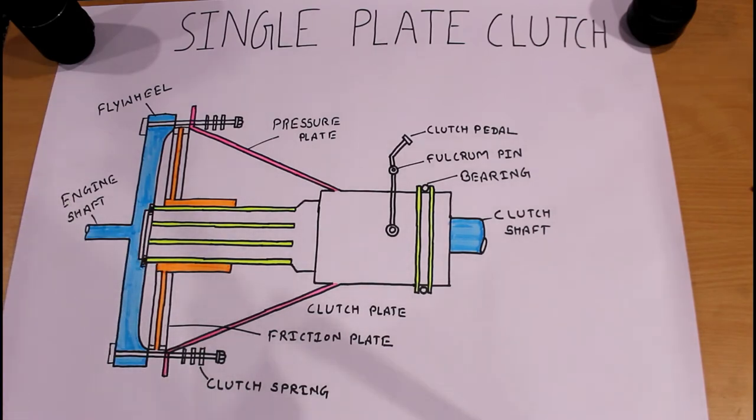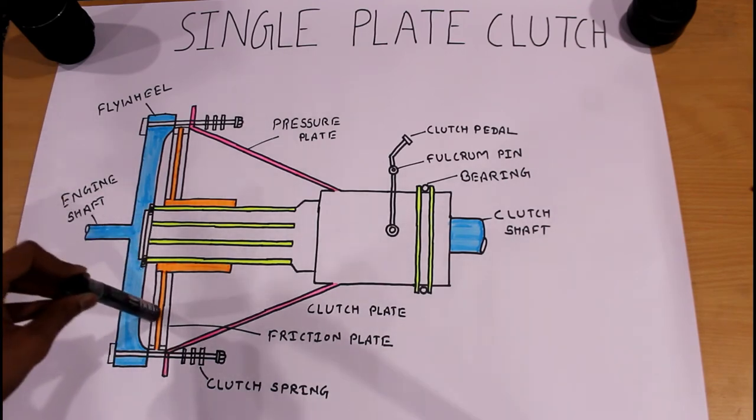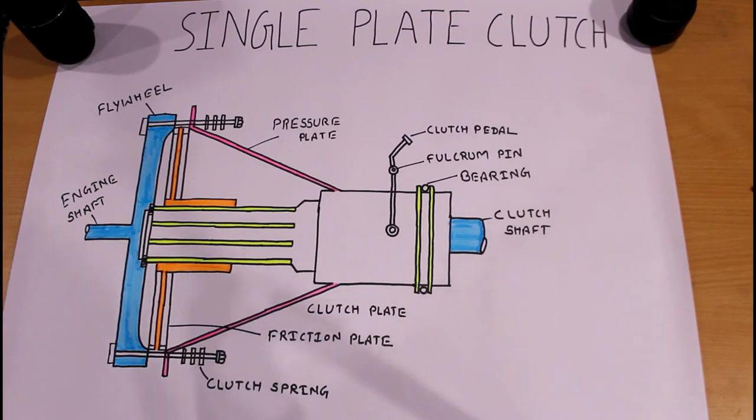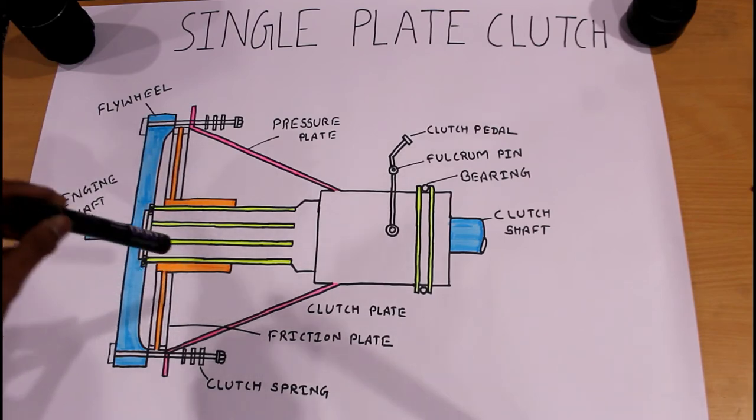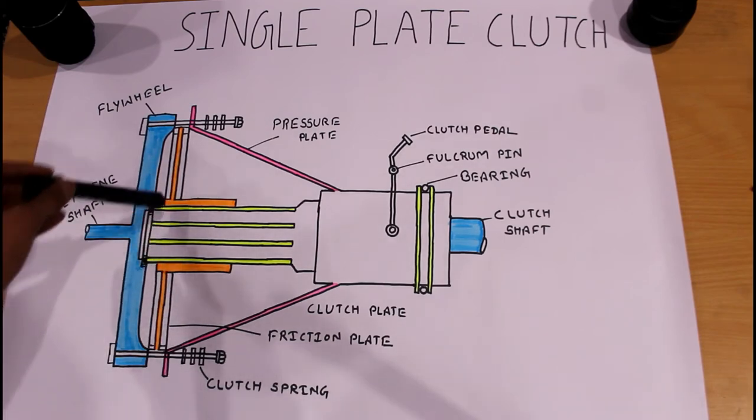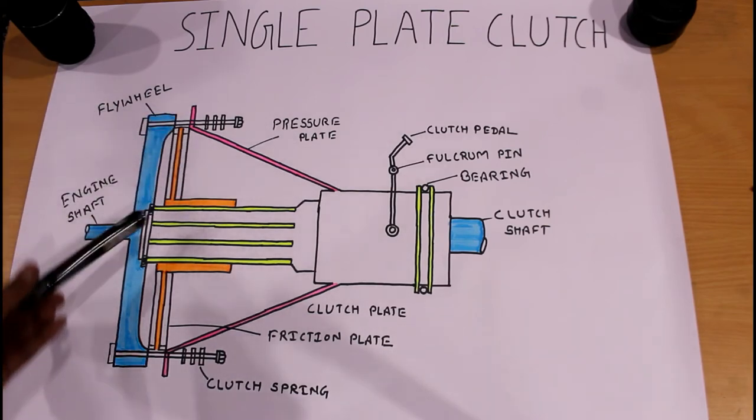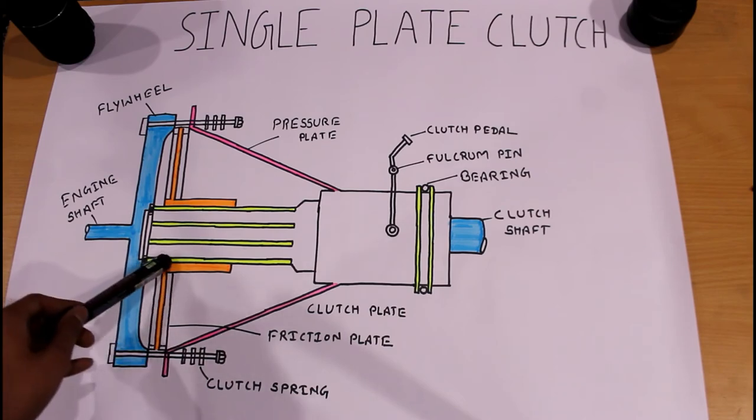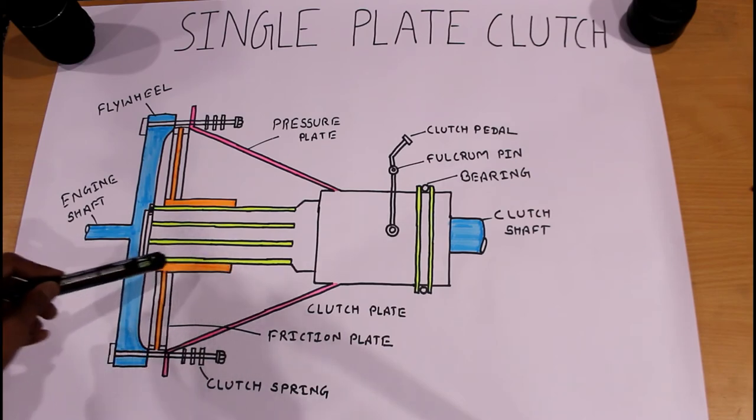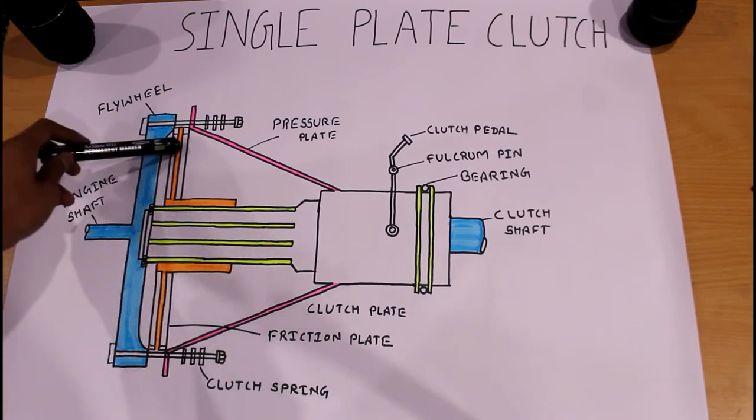Why is this called single plate clutch? Because in this assembly only a single clutch plate is used. In a single plate clutch, a single plate clutch is used but two friction plates are used. You can have a look here: this orange line is a single plate or clutch plate, and these white lines are friction plates.